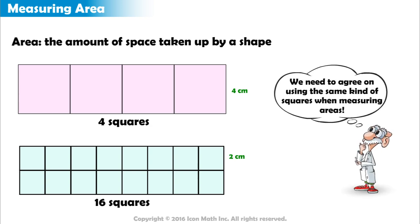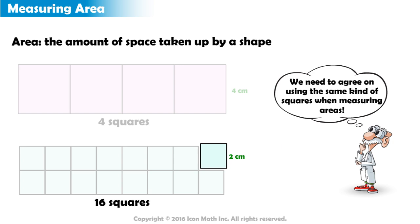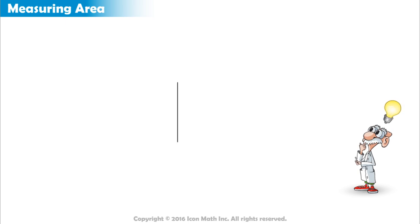We need to agree on using the same kind of square when talking about areas. It cannot have a side length of two centimeters one time and a side length of four centimeters another time, because then we won't be able to directly compare the areas sixteen and four. So everyone will use a square with a side length of one — whether it is one centimeter, one foot, one inch, or any other one unit of length.